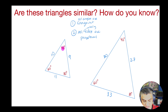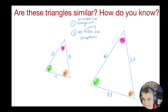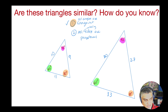Let's look at this angle and this angle — yes. What about this angle down here and this angle down here — yes. And then we have this angle over here and this angle over here — there we go. All angles are congruent. Check.